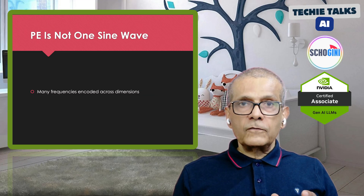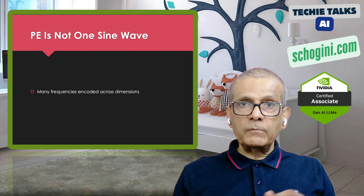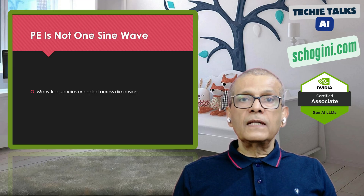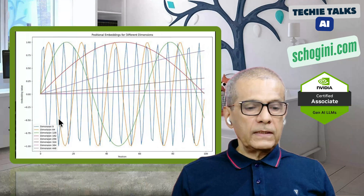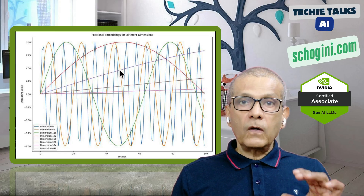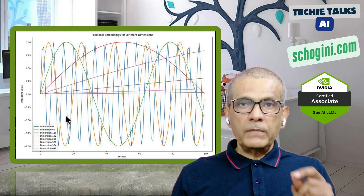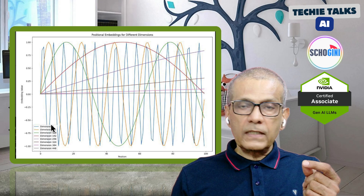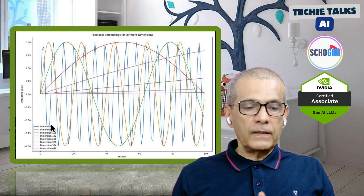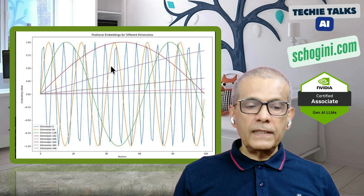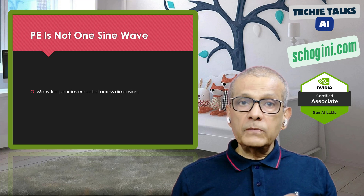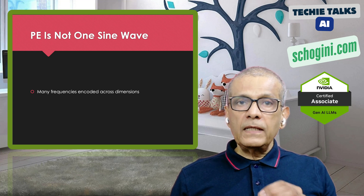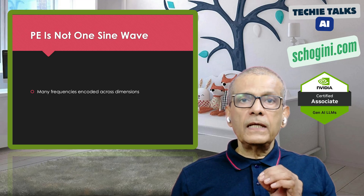Positional encoding is not one sine wave. For a 1536-dimensional embedding, there will be 768 sine waves and 768 cosine waves — a stack of waves from slow to fast. Each dimension pair has a different frequency. Low dimensions have slow waves; high dimensions have very fast oscillations. It's like playing many musical notes at once, and the combination uniquely encodes the position.